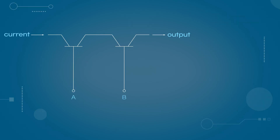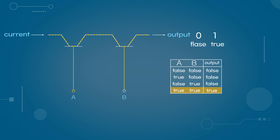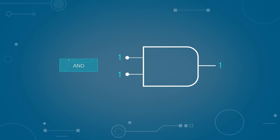When two transistors are connected like this, current flows only if both A and B are supplied with voltage. If even one is off, current will not flow. Computers recognize digital signals made of ones and zeros, where current flow represents one and no current flow represents zero. These ones and zeros can also represent true and false. A logic gate where the result is true only when both transistors are true is called an AND gate, and it is abstractly represented in this form.